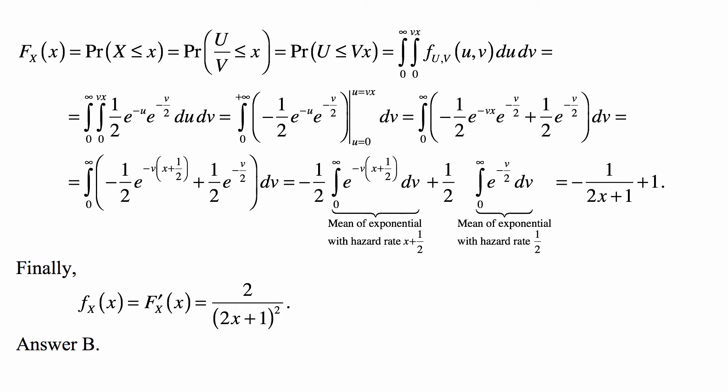If we treat this as a survival function, this is the integral of the survival function, which must be the mean of an exponential random variable with hazard rate x + 1/2, because the survival function of exponential distribution is e^{-λt}, where λ here is x + 1/2.